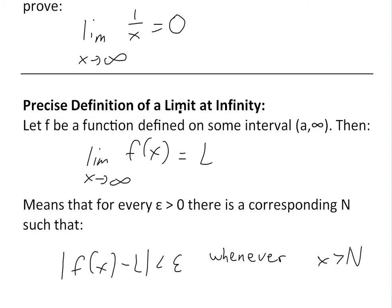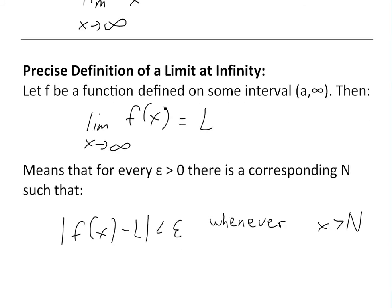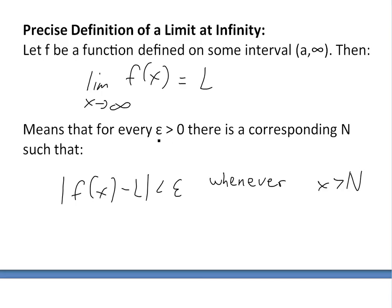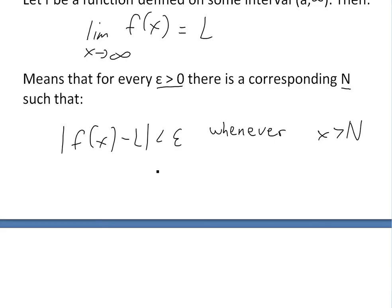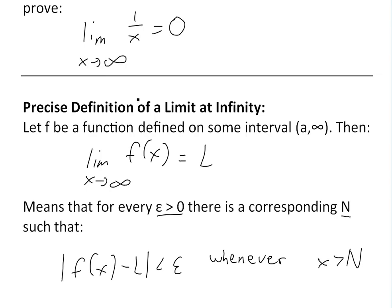The precise definition of a limit at infinity: let f be a function defined on some interval a to infinity. Then the limit as x approaches infinity of f(x) equals L — a horizontal asymptote — means that for every epsilon, there exists a corresponding number N such that the absolute value of f(x) minus L is less than epsilon whenever x is greater than N. See the video link below for more detail.